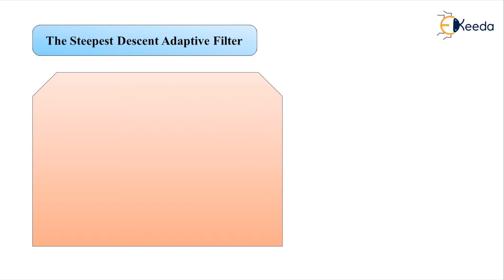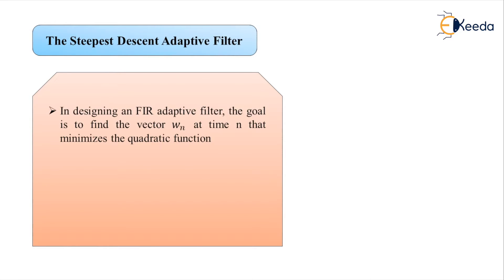The ultimate aim is to find the vector w_n at time n that minimizes the quadratic function given by ζ(n), which equals the estimate — represented as capital E inside curly brackets — of |e(n)|². For minimization, one way is to set the derivatives of ζ(n) with respect to the conjugate of w(k) equal to zero. But another approach is to search for the solution using the method of steepest descent, which is our current topic.